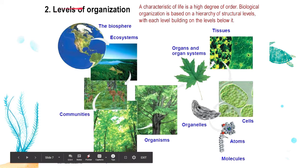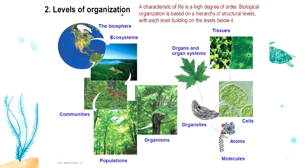All living things are capable of maintaining homeostasis through metabolic processes that regulate their body functions. Number two: another characteristic of life is having levels of organization. A characteristic of life is a high degree of order, and biological organization is based on structural levels. It is important for scientists to identify these different structural levels so that they can better focus on what they're studying.